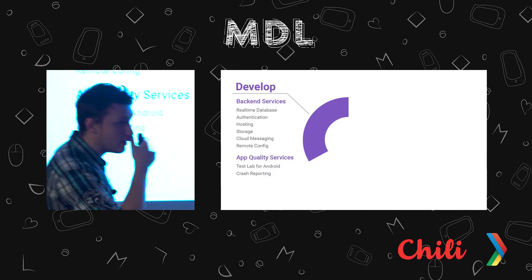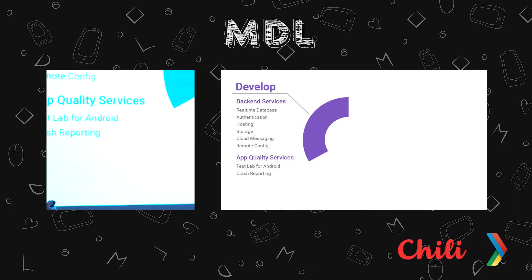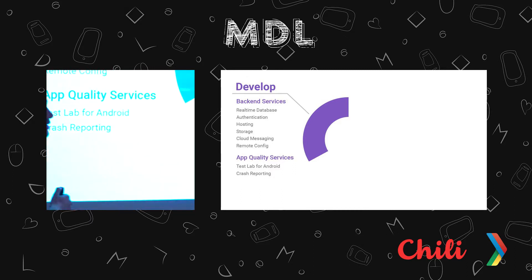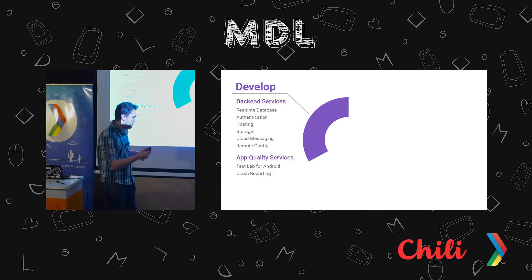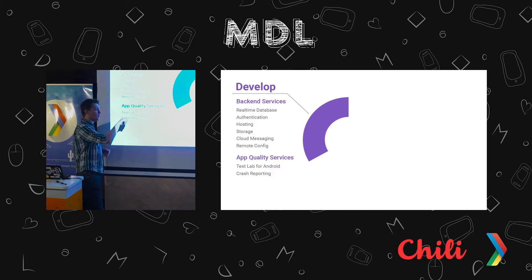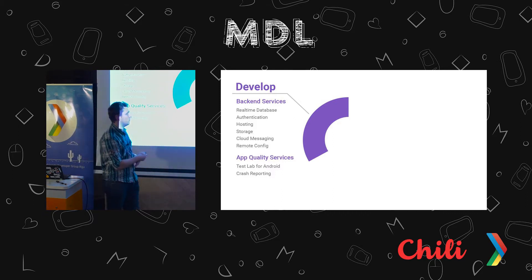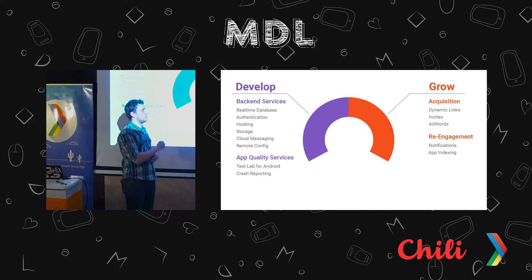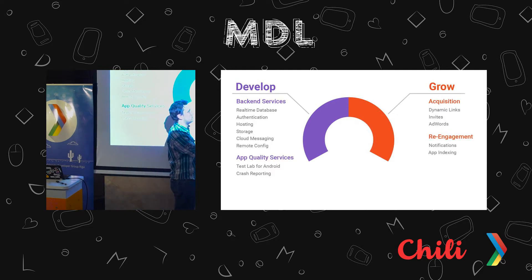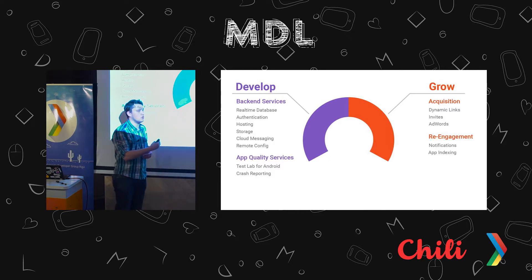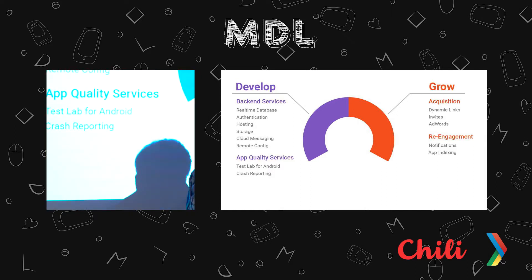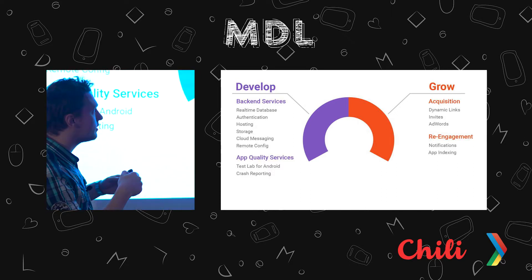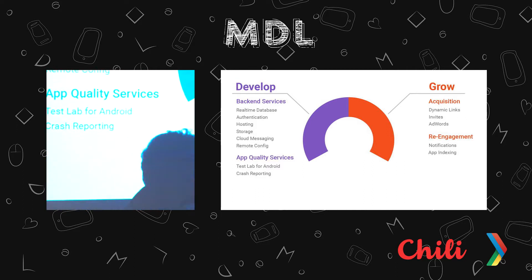Cloud Messaging will be covered by Philip in the next presentation. Remote Config is also an interesting thing — key-value pairs that allow you to configure user settings and how they react to different application scenarios. Some app quality services, which we'll also cover. Then there's the grow stuff — AdWords and different possibilities for you to grow your user base. We'll touch it slightly — I'm no expert in growing a user base with Firebase, but possibly you'll get some interesting ideas out of it.